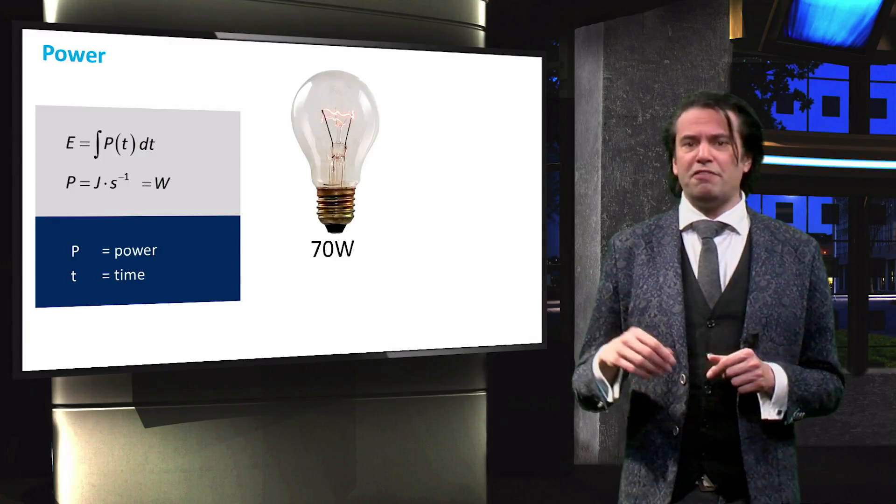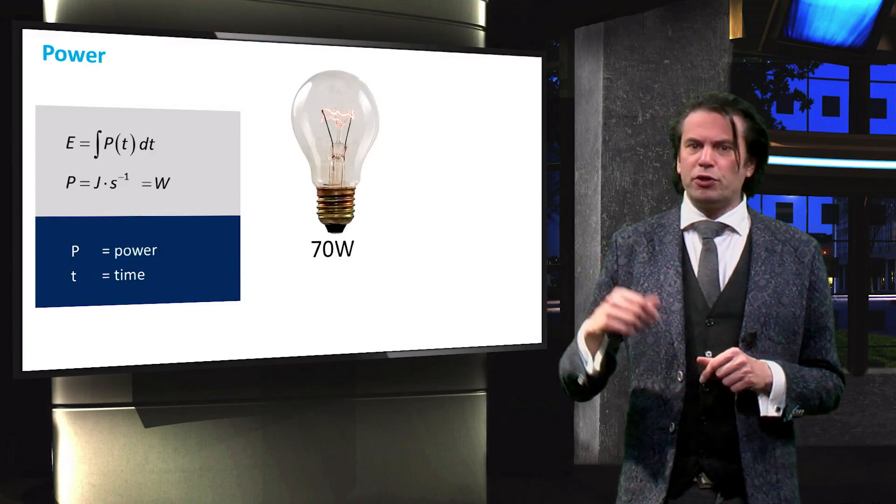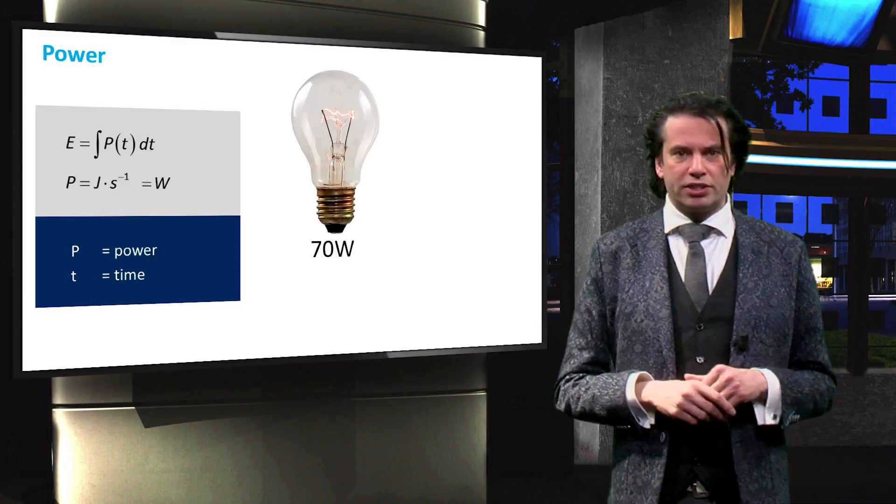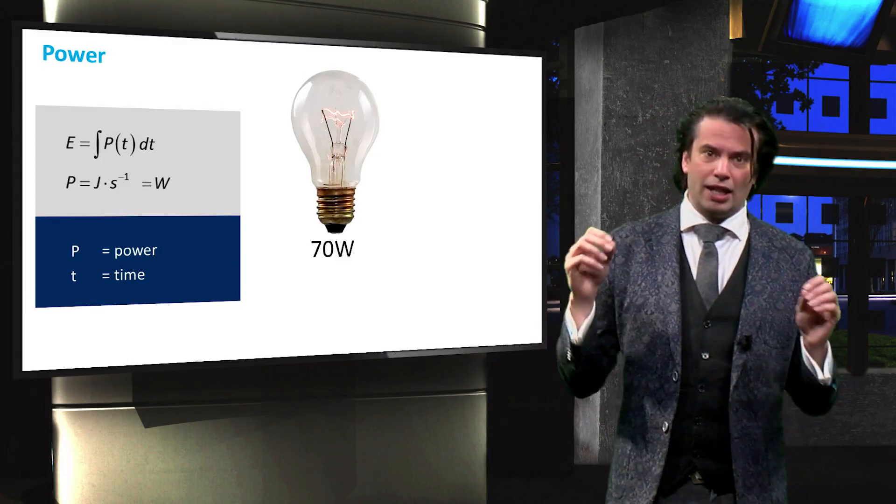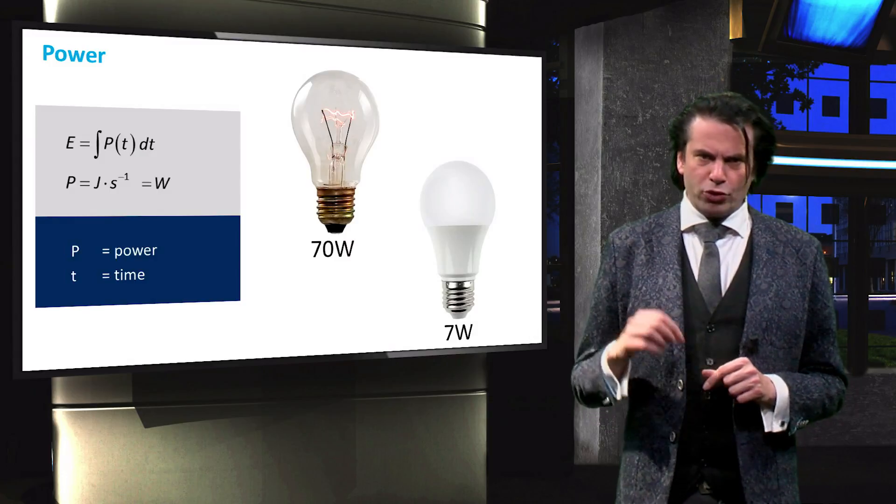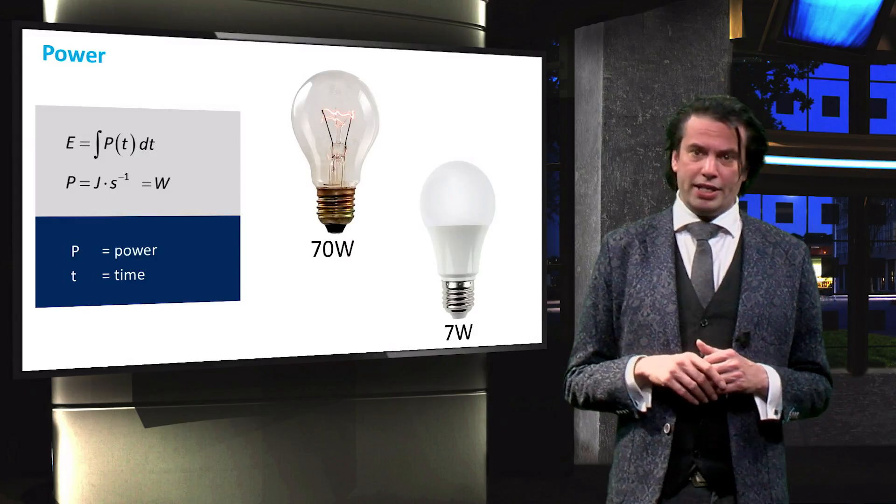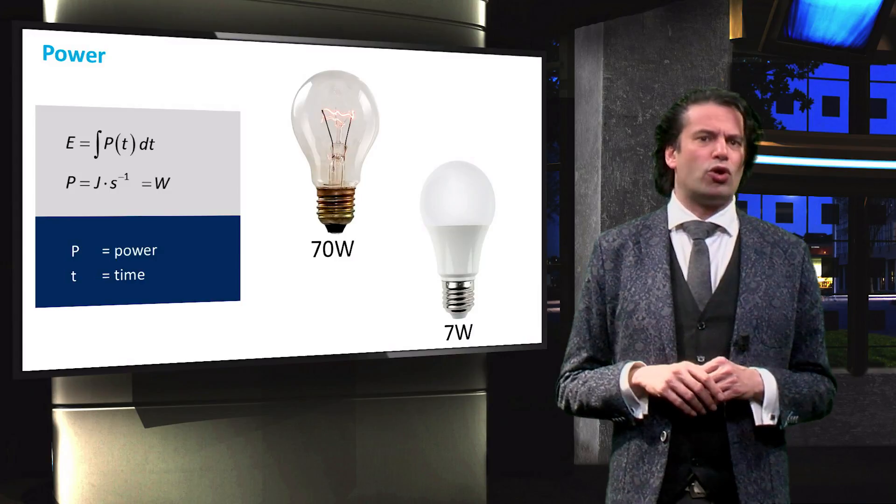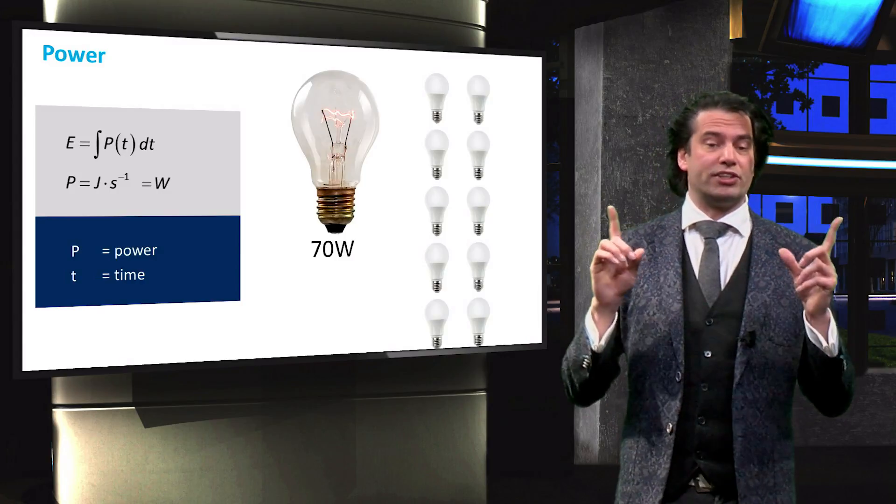As an example, with 70 joules of energy we could power this 70 watt incandescent light for exactly one second. We could also power this 7 watt LED light for 10 seconds or 10 of these LED lights for one second.